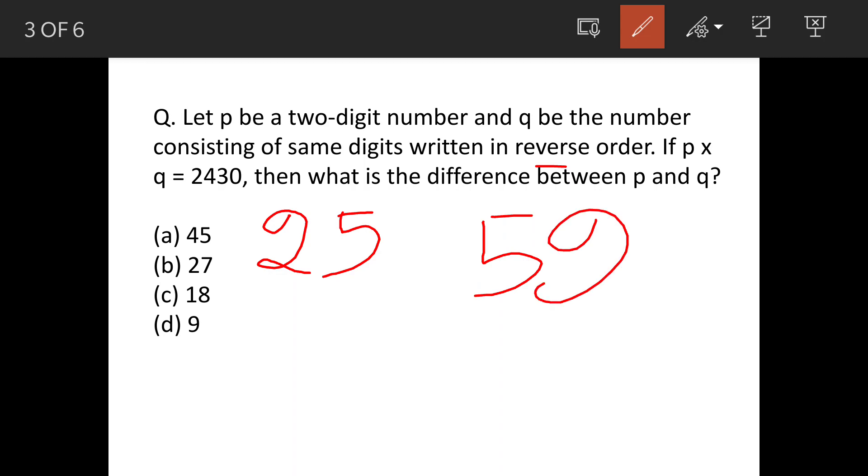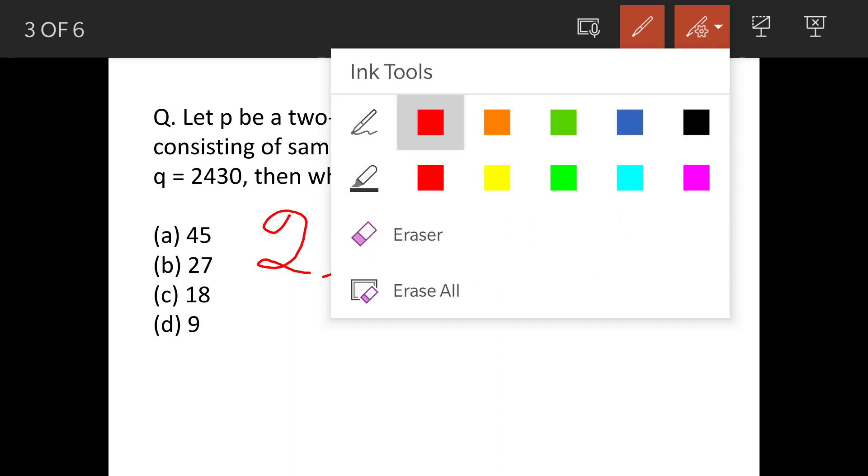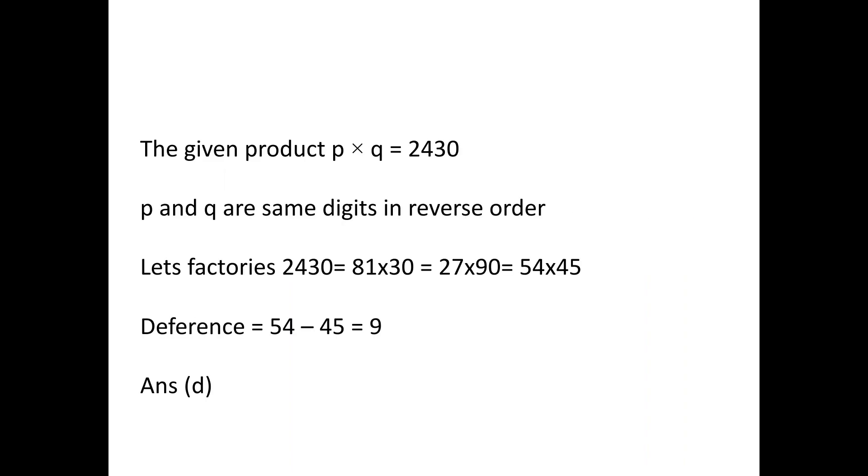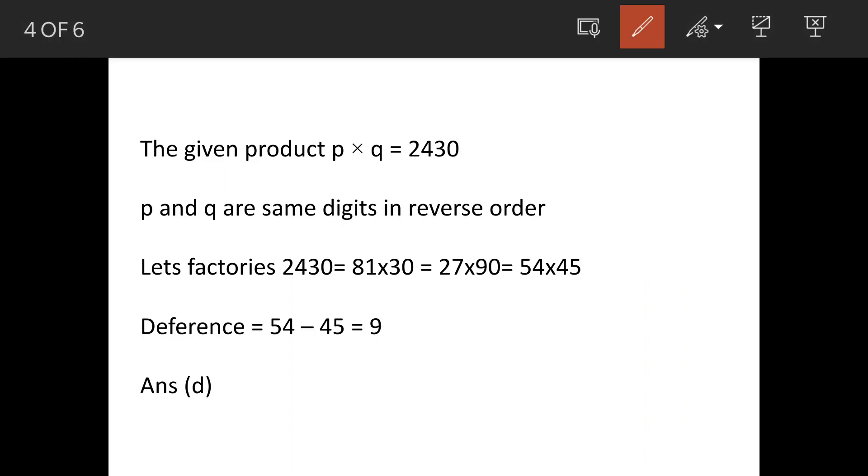If p times q equals 2430, then what is the difference between p and q? These are the options. We will solve this.